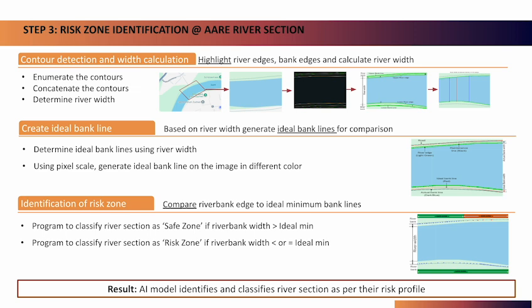In the last step, based on river width, our AI model creates an ideal bank line and compares it with the existing bank line, to classify river zones as risk or safe zones.